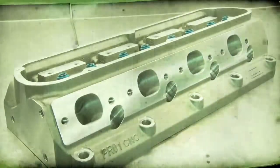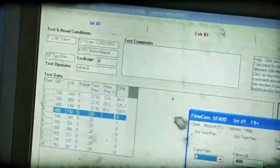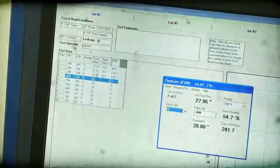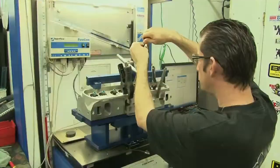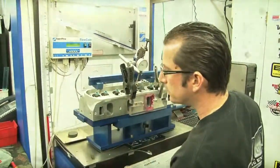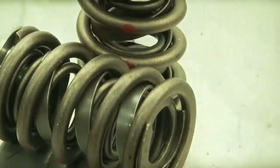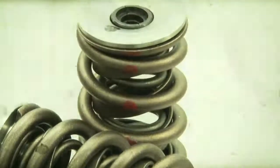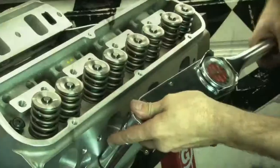Our cylinder head of choice was the Dart Pro 1 225cc CNC cylinder heads. They feature full CNC runners that flow a lot of air, and a lot meaning 325 CFM on the intake and 235 CFM on the exhaust at 700 lift. The assembled heads come fitted with high quality components including dual valve springs and titanium retainers, though you can get the heads bare if you have your own combination in mind.